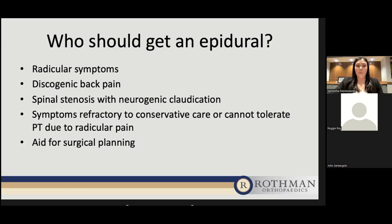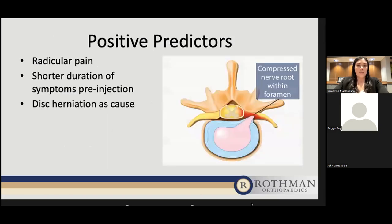The goal of the injection at that point is to provide some pain relief so patients are able to participate with physical therapy. Additionally, epidurals can be useful for surgical planning — if a surgeon is looking to do a discectomy or other intervention, they can ask for an epidural to help identify which level to target. Positive predictors for doing well with an epidural include having radicular pain rather than just back or neck pain, shorter duration of symptoms (usually less than six months), and disc herniation as the cause of the radicular pain rather than facet joint arthritis or vertebral body slippage.